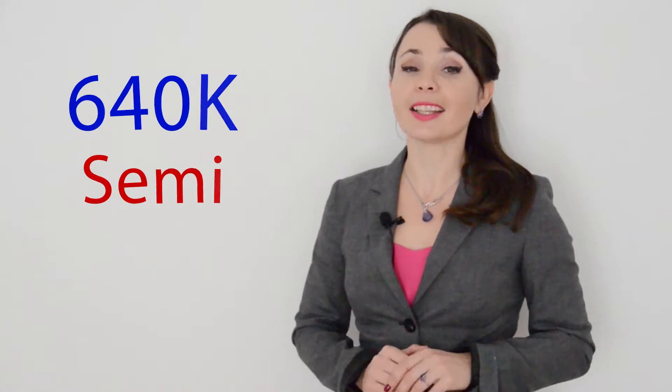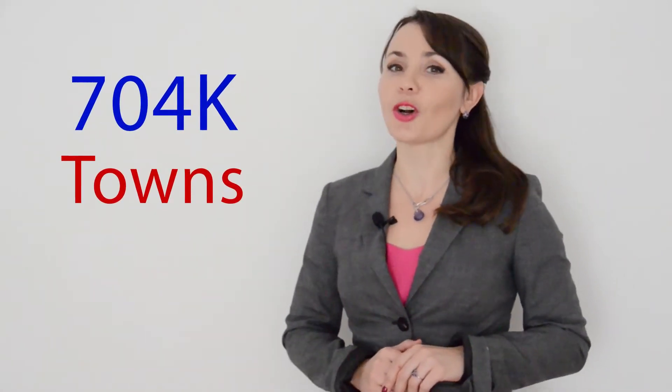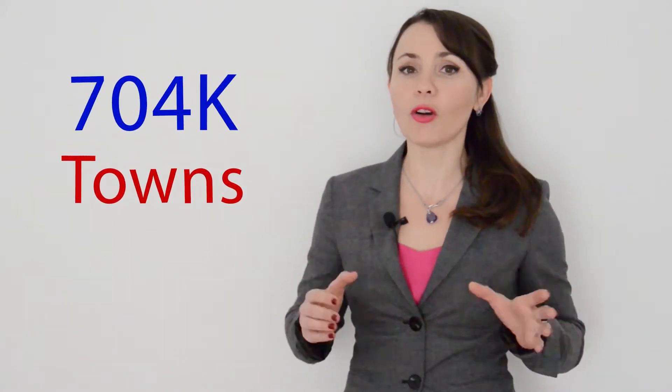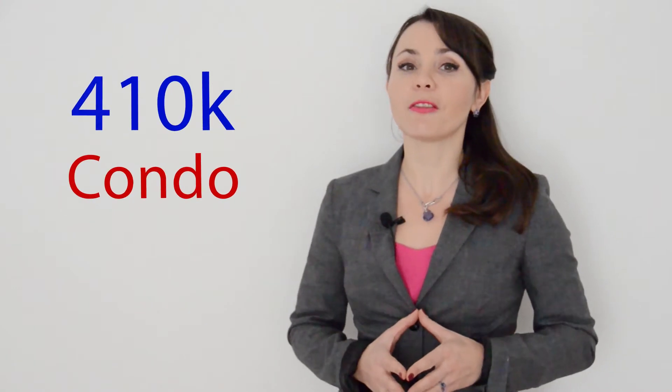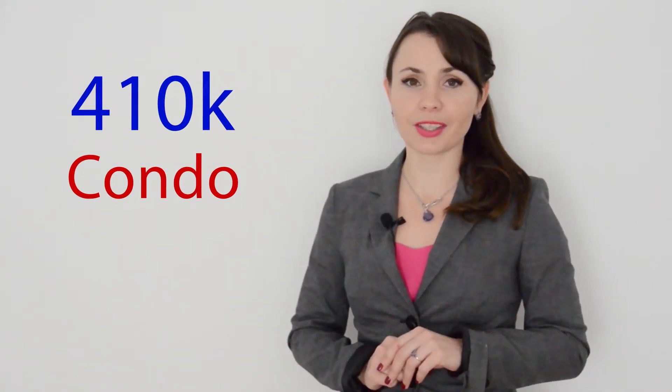The average price for a semi-detached was $640,000 and $704,000 for a townhouse. Overall, nine condo apartments were sold and the average price for a condo apartment in Newmarket in January was $410,000. Overall pricing for any types of homes at this time around was $776,000.